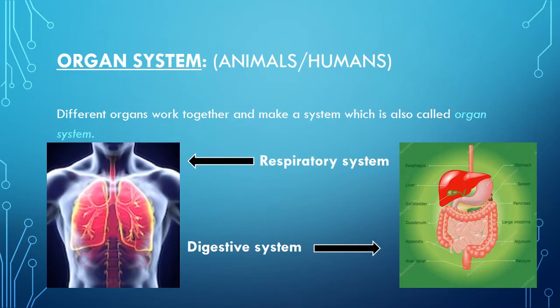Now the organ systems of animals and humans. Different organs work together and make a system, which is also called organ systems. Just as different tissues come together to form an organ, different organs come together to form one system to perform one function.